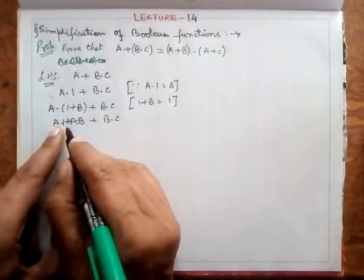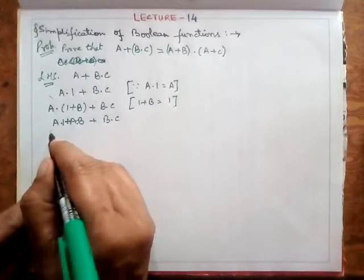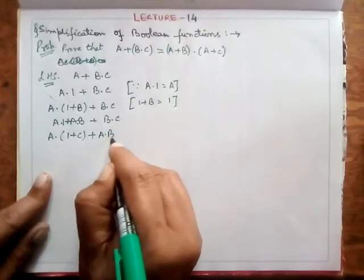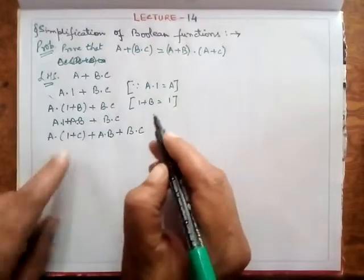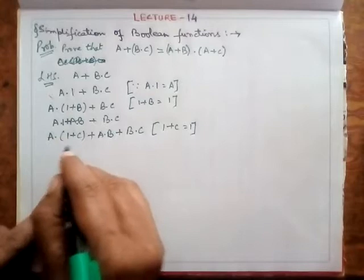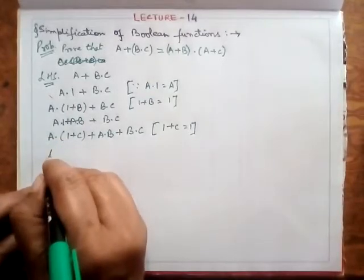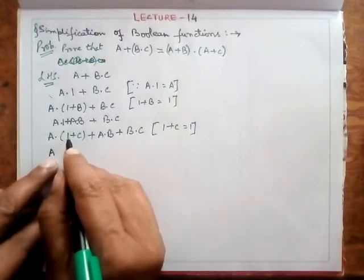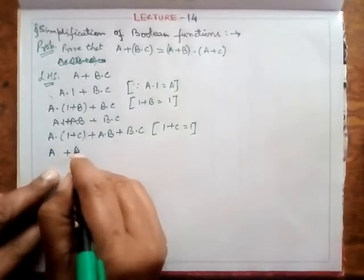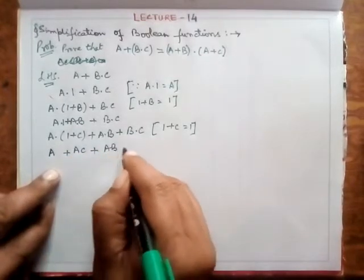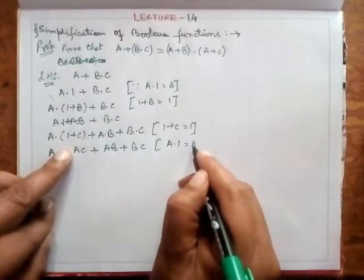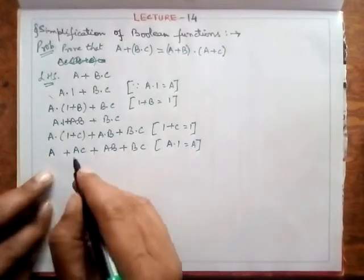I apply the distributive law again: it is a·1 plus a·b plus b·c. Now this 1 I can write as 1 plus c, again because 1 plus c equals 1. Expanding: a·1 plus a·c plus a·b plus b·c. And a·1 equals a, so this gives a plus a·c plus a·b plus b·c.